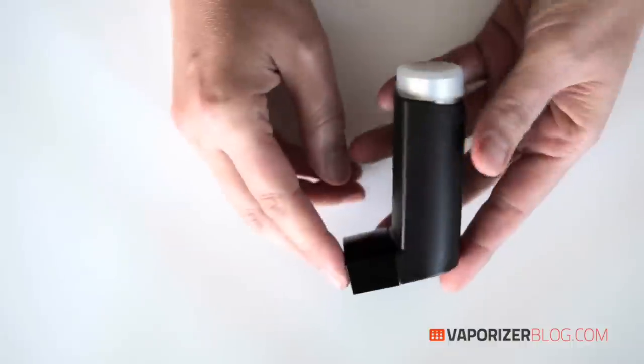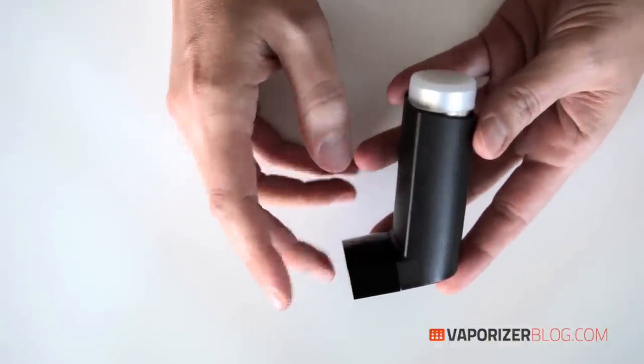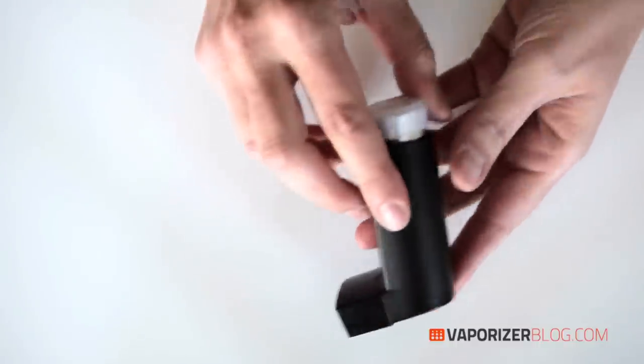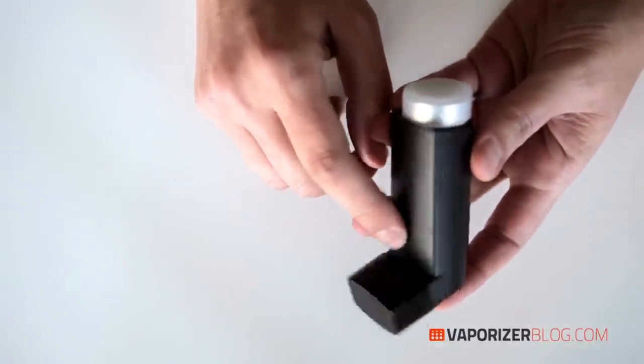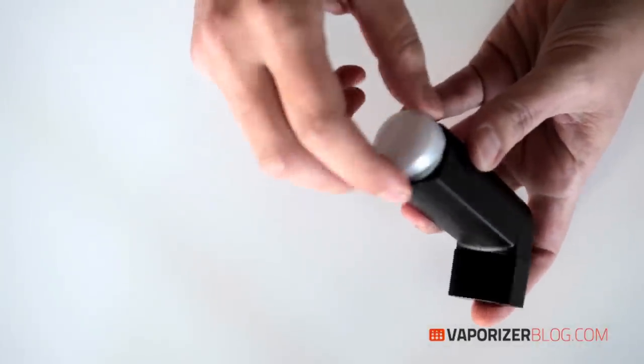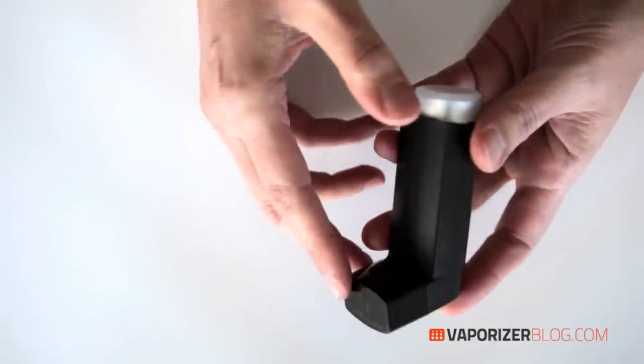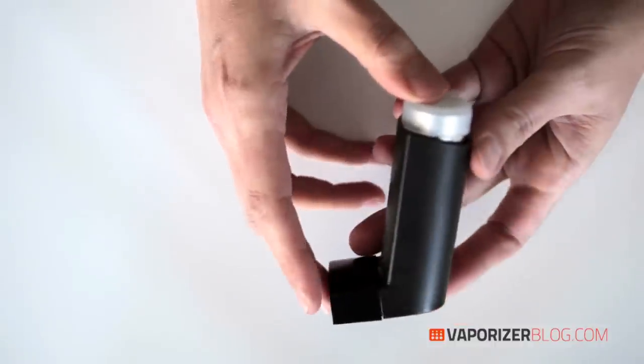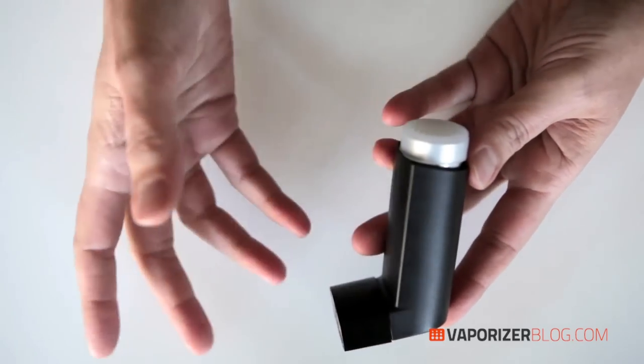So there you have it the Puffet portable vaporizer a discreet flavorful easy to use portable vaporizer and a nice addition to the market. Some of the nice features on this is that it has this nice temperature control there's the removable stir tool the gold plated heating chamber really fast heat up time the automatic shut off a USB charge great taste and silent also the design as an asthma inhaler very clever makes it incredibly discreet.